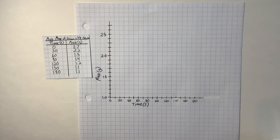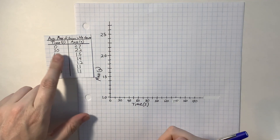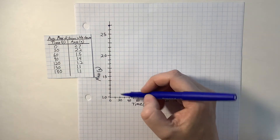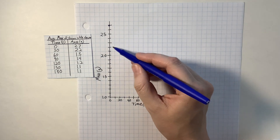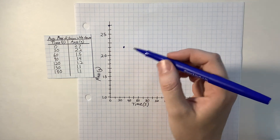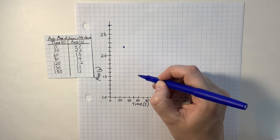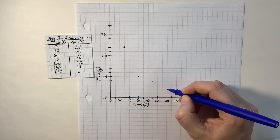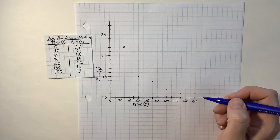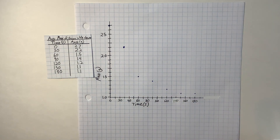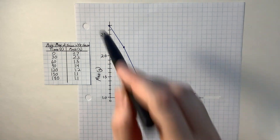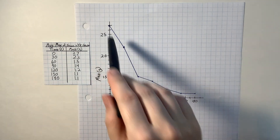Now I'm going to make dots that correlate with each paired number set. At 0 seconds, it was 2.7 grams, so I draw a dot there. At 30 seconds it was 2.2; at 60 seconds it was 1.5; at 90 it was 1.4; at 120 it was 1.2; at 150 it was 1.1; and 180 was also 1.1. This is a line graph, so I'm going to connect my dots because it shows change over time. The line dropped dramatically and then started evening out.